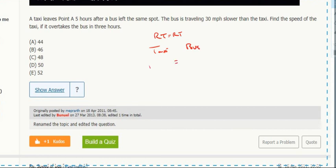Okay, so it's r minus 30. And then with the two times: for the taxi, that's three hours - that's how long it took to catch up. For the bus, it's eight hours: the first five hours plus